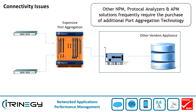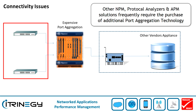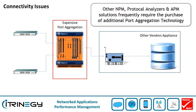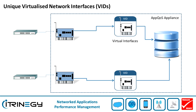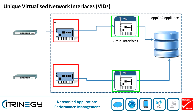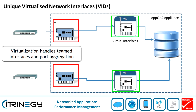Traditionally, network performance management solutions, protocol analyzers and other APM products have limited connectivity capabilities. These vendors handle issues such as teamed interfaces or gathering data across multiple links by recommending you purchase external port aggregation products. However, APCOS negates the need for this expensive additional hardware with another unique feature. The APCOS appliance network interfaces are all virtualized, providing a very elegant and flexible way to manage your data collection without the need to purchase expensive port aggregation technology.